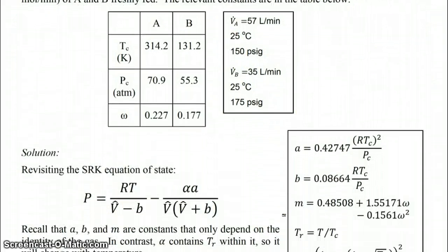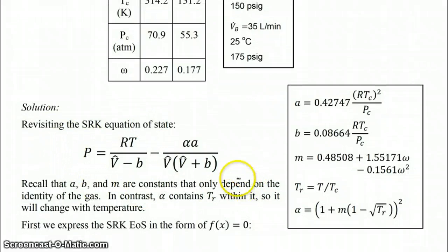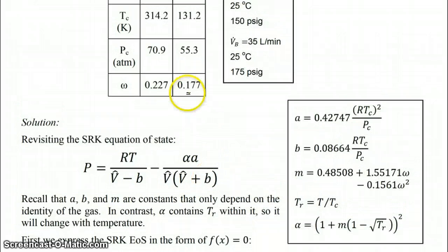Recall the SRK equation of state looks like this here where each one of these constants alpha, a, and b can be evaluated on the basis of the gas-specific constants that I've shown up here in this table according to these calculations over here on the side. So in order to get a and b you have to do these two calculations. In order to get alpha you have to first use the acentric factor to calculate this value m and also use the reduced temperature here to get alpha.